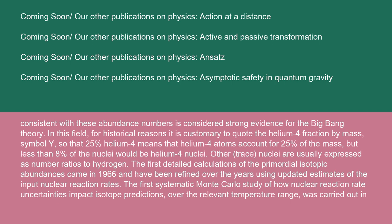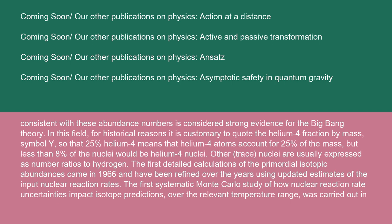The first detailed calculations of the primordial isotopic abundances came in 1966 and have been refined over the years using updated estimates of the input nuclear reaction rates. The first systematic Monte Carlo study of how nuclear reaction rate uncertainties impact isotope predictions over the relevant temperature range was carried out in 1993.